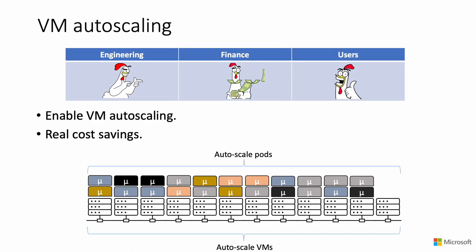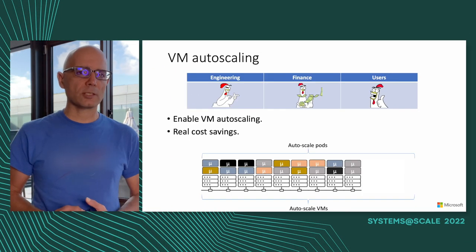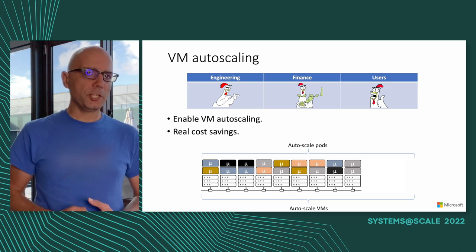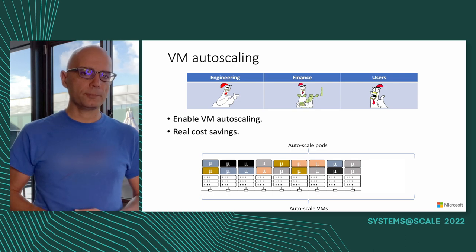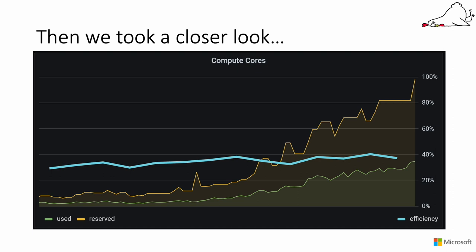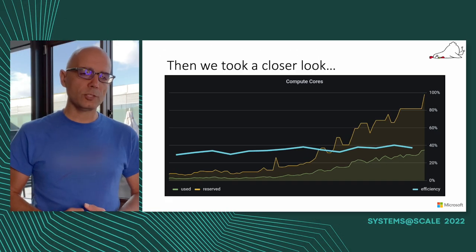Then we started using virtual machine autoscaling — deallocating virtual machines or compute nodes that we no longer need, and reallocating them when we need them again. That's when we started to see real cost savings; our finance team was really happy. Our users were still happy because we still had everything allocated at max. But when we took a closer look, things were not as good as we thought. Looking at a typical deployment graph, the orange line shows CPUs allocated and the green line shows actual usage — giving us around 35% efficiency, which was not good enough. At our scale with hundreds of thousands of CPUs and pods running, every millicore counts.